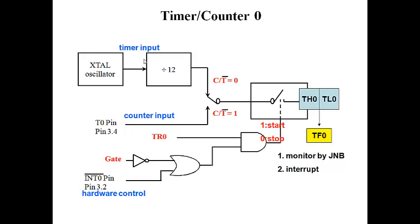TR0 denotes timer 0 or counter 0. TR1 denotes timer 1 or counter 1. This is the block diagram for timer or counter.